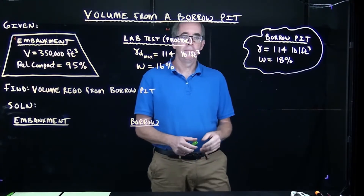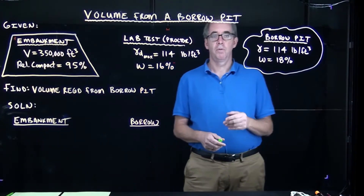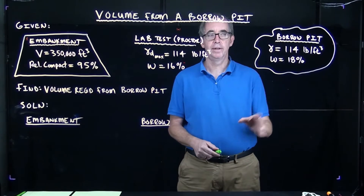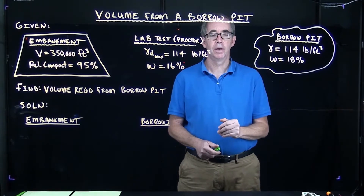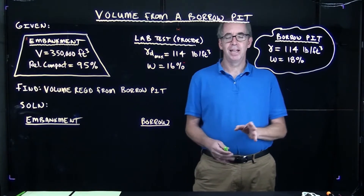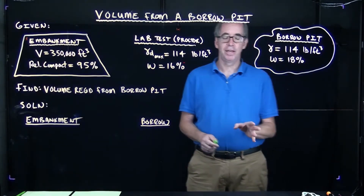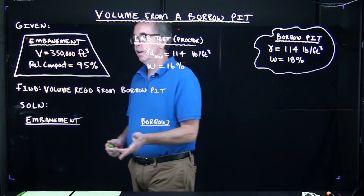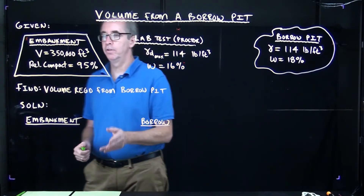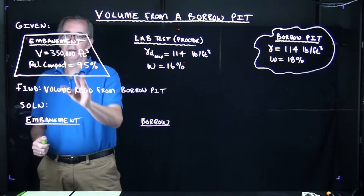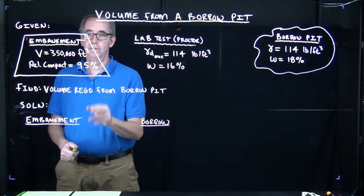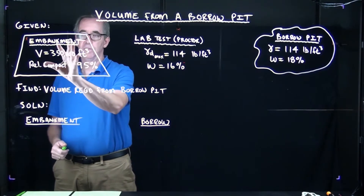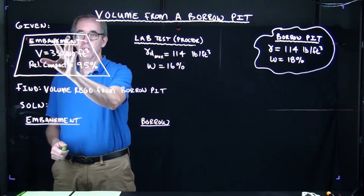In this video we're going to compute the required volume that needs to be extracted from a borrow pit. Let me take you through the scenario: there's a project in which we're installing 350,000 cubic feet of soil for an embankment.